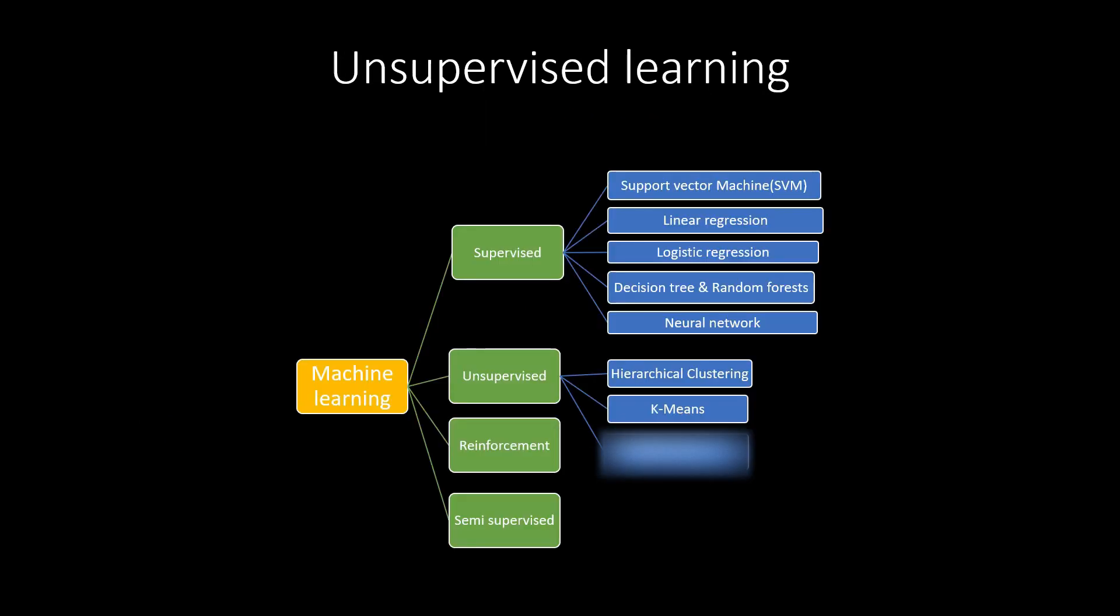In unsupervised learning, training data is unlabeled or unclassified. The algorithm explores similarities between instances of data and then tries to group them on its own. Hierarchical clustering and k-means are algorithms in this category. These algorithms are good for anomaly detection; fraud detection systems are a perfect example.